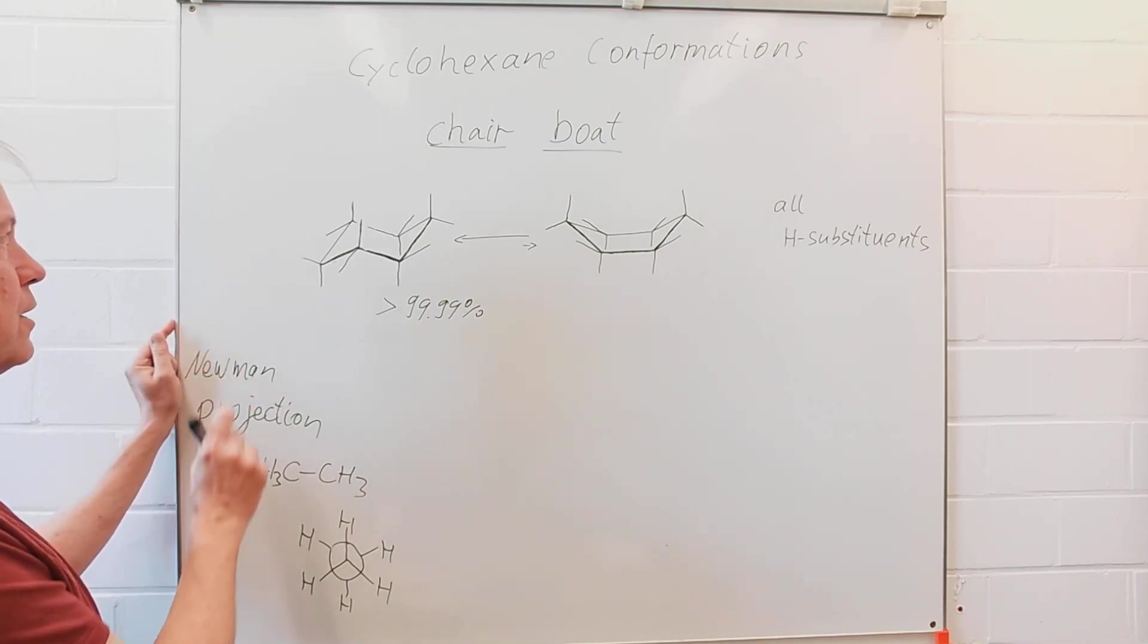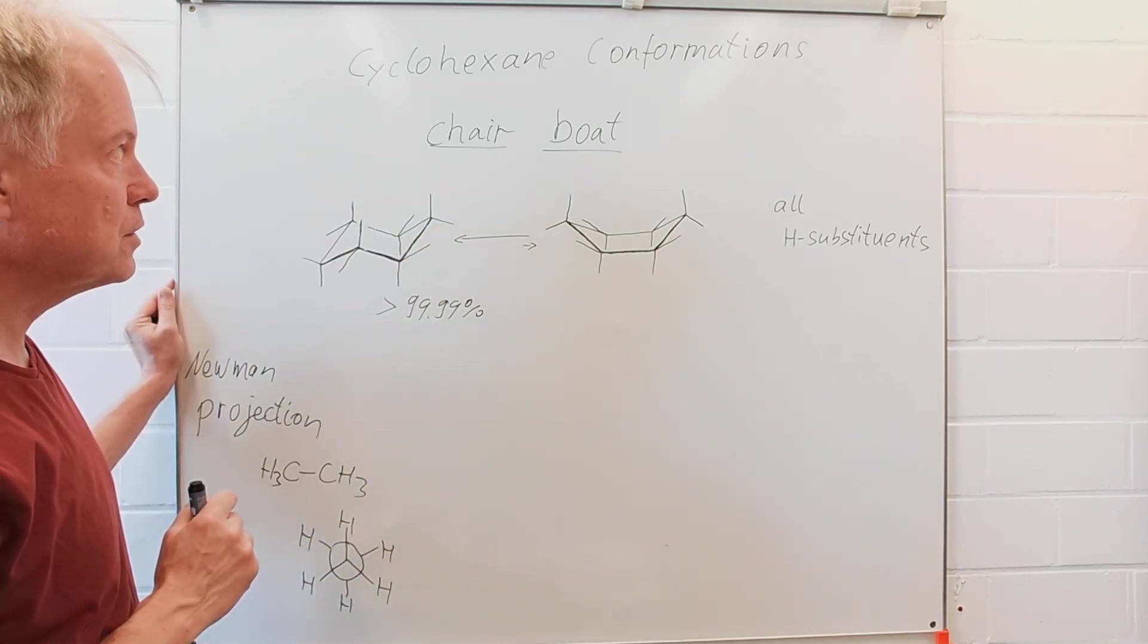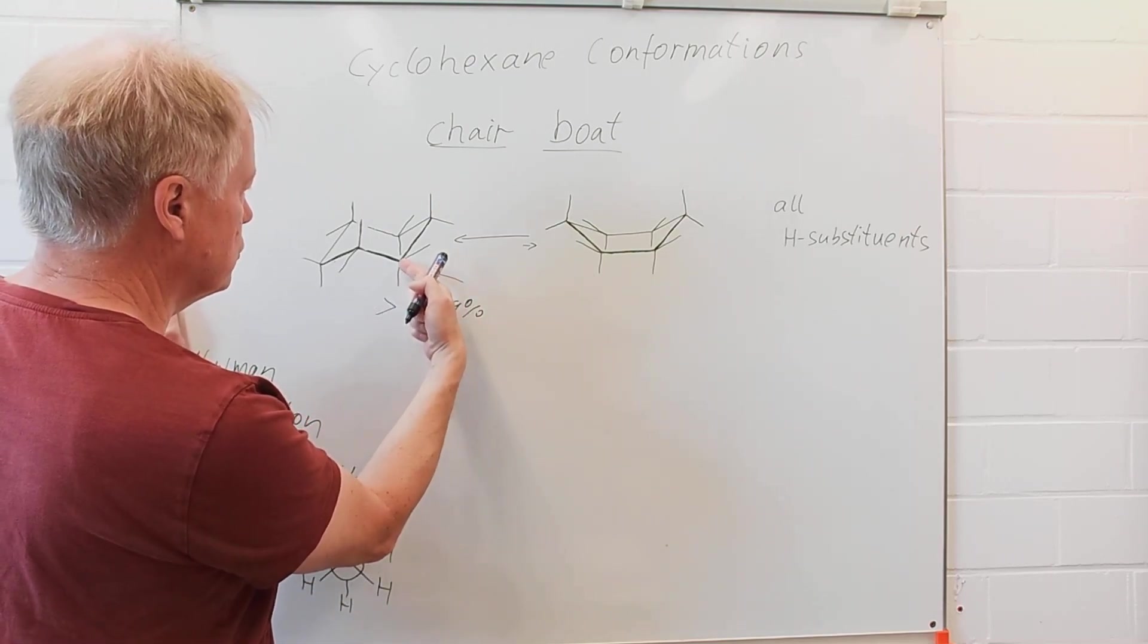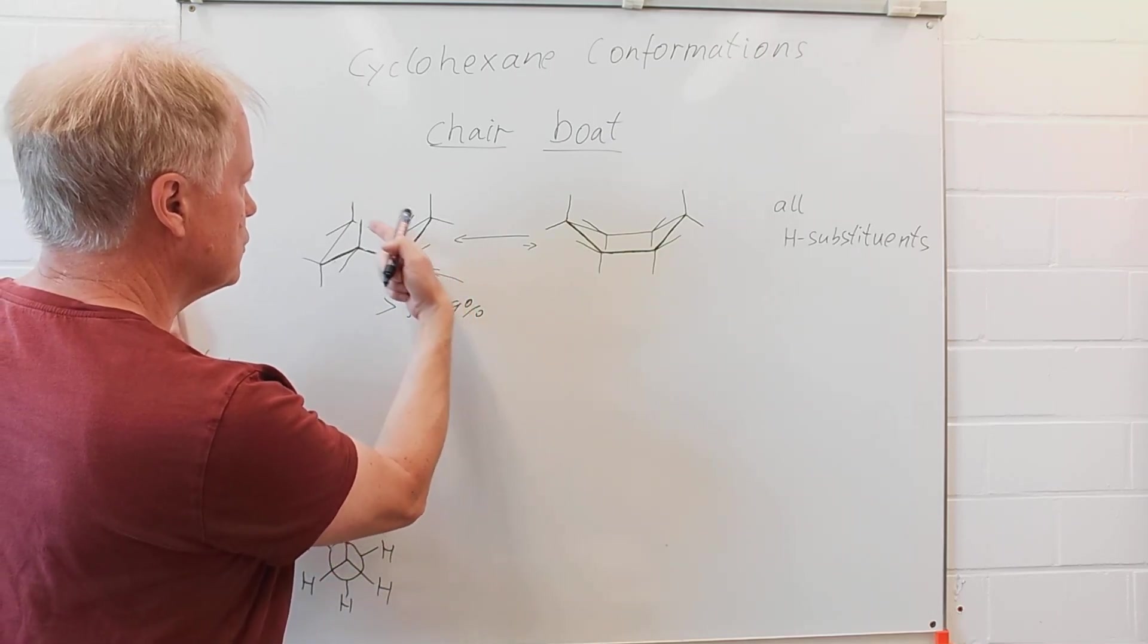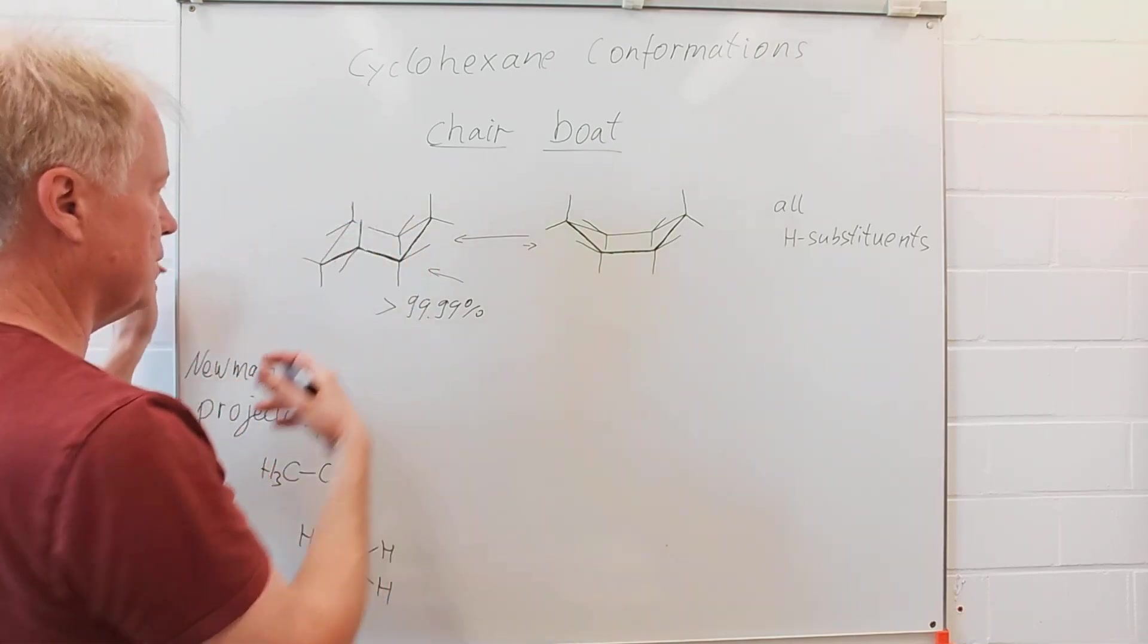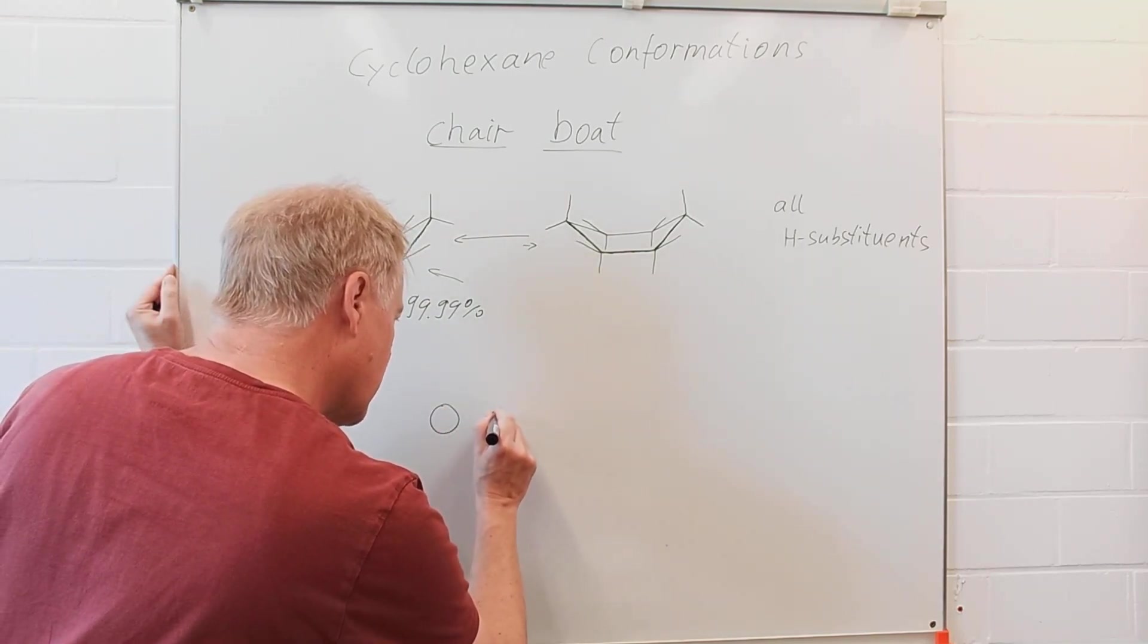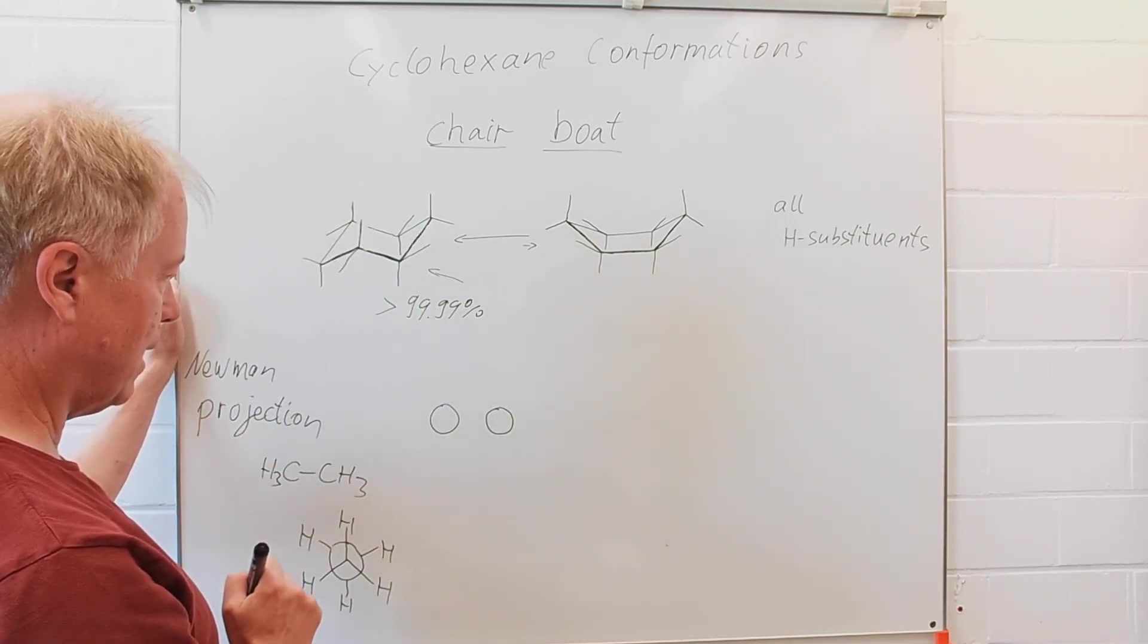So, let us try a Newman projection of those two cyclohexane conformations. Having a look in this direction onto this CC bond and at the same time also to the second CC bond here which is located behind the whiteboard. Then we would see side by side those two carbon atoms.